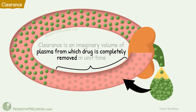In fact, this reverse way of thinking about clearance is much more easy. Simply find out the volume of plasma which contained the eliminated amount of drug in the beginning. Do it for unit time and you get clearance.